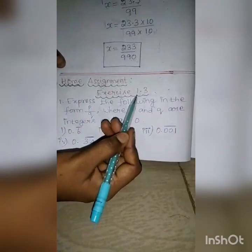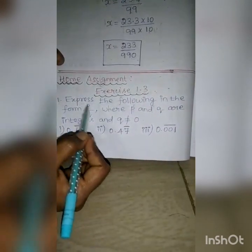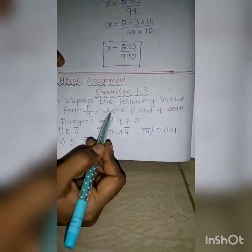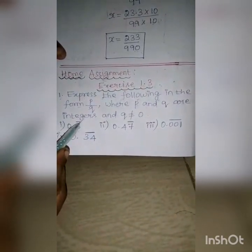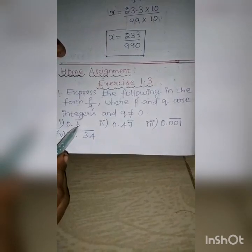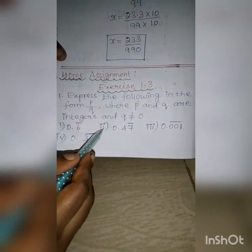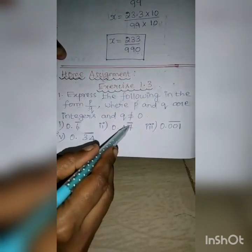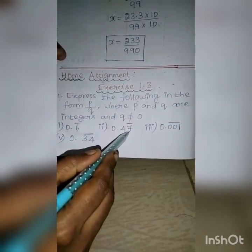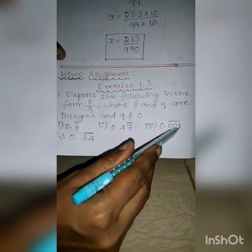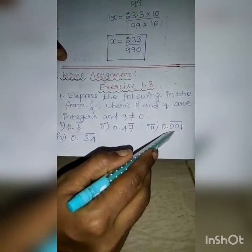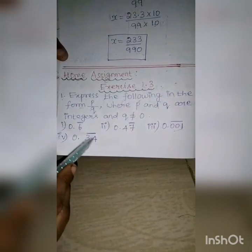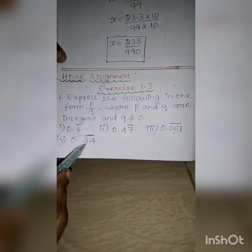Home assignment. Exercise 1.3, question number 1: Express the following in the form P by Q, where P and Q are integers and Q not equal to 0. First: 0.6 bar — 6 is repeated, so multiply by 10. Second: 0.47 bar — 7 only has the bar, so multiply by 10. Third: 0.001 bar — bar for 0, 0, 1, so multiply by 1000. Fourth: 0.34 bar — multiply by 100.